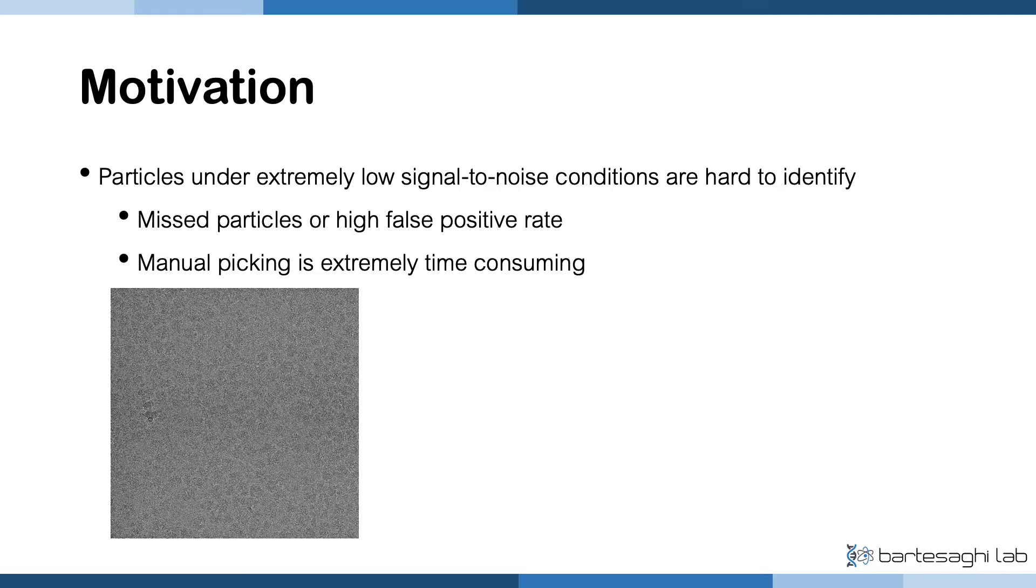Currently, there are automatic and semi-automatic algorithms that have proven to work well on datasets with relatively higher signal-to-noise ratio, or bigger size proteins. Especially, convolutional neural network-based methods such as Topaz and Cryo-Yolo are very promising. However, these methods still yield suboptimal results under extremely low SNR conditions, which is especially common for smaller size proteins. This results in many missed particles or high false positive rate. Yet, manual picking is especially time-consuming.